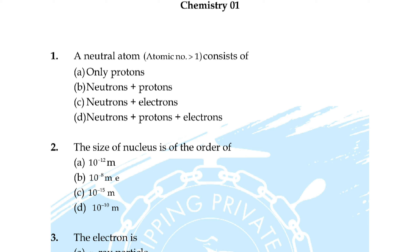Correct answer is option C. Question number nine: assuming Hund's rule is violated, the bond order and magnetic nature of the diatomic molecule B₂ is — option A: one and diamagnetic, B: one and paramagnetic, option C: zero and diamagnetic, option D: zero and paramagnetic.